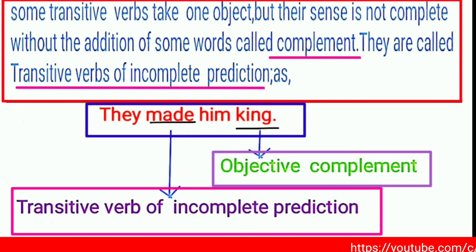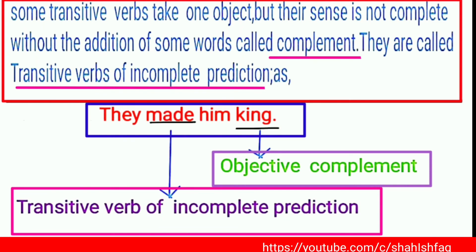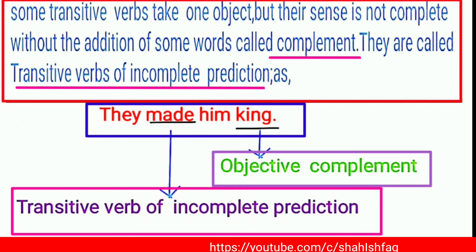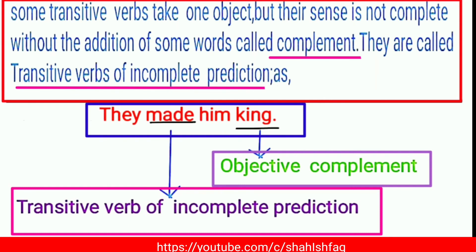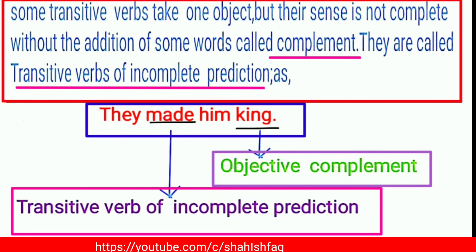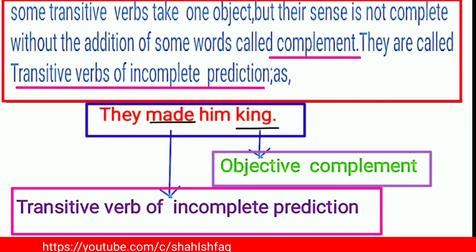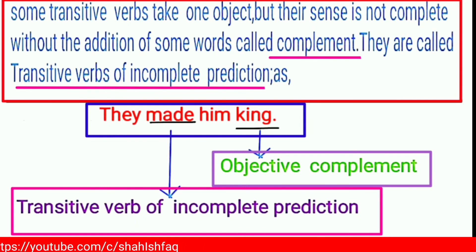For example, the sentence 'They made him king.' Here, 'made' is the transitive verb. But the sentence does not feel complete without an additional word. So even after 'him,' another word is needed to describe the condition or state created by the action. The verb 'made' requires more information.